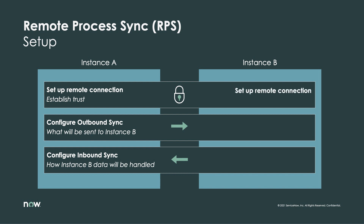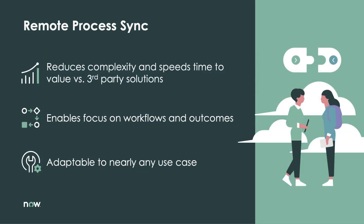This same process is then performed on the second instance. This robust framework provides a structured approach to establishing bidirectional sync in a manner that is both easy to set up and deeply customizable, resulting in value to the business much faster than integrations built with third-party solutions. The best part is, using this framework enables businesses to think in terms of business process, leaving the under-the-hood technical details like ordered delivery, downtime recovery, secure data transmission, and complex ETL operations in the capable hands of Remote Process Sync on the Now platform.